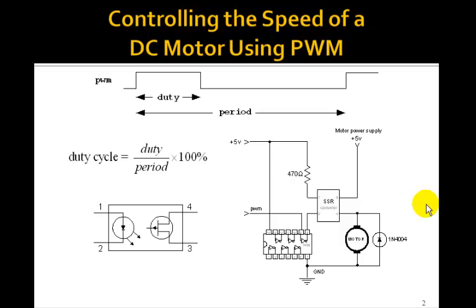Now the speed of a DC motor, motor shown here, is determined by the voltage across the motor. The higher the voltage, the higher the speed.